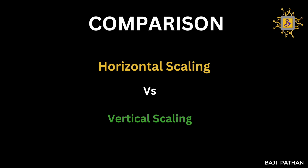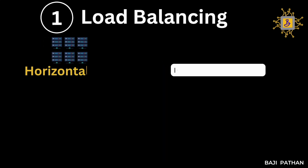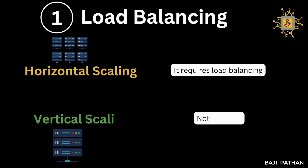The first one in our list is load balancing. In horizontal scaling, we really need to balance the load because we will have multiple machines to handle the user requests. Whereas in vertical scaling, we really don't need to balance the load because it is only a single machine.